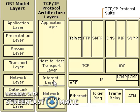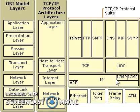The IP datagram is the basic unit of information transmitted across TCP/IP networks. Other internet network layer protocols include ICMP, IGMP, ARP, and RARP, and so on.